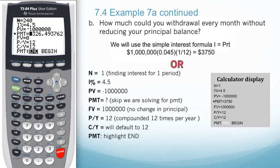One way you can do this is to use the simple interest formula, I equals PRT, taking a million times our interest rate of 4.5% as a decimal, times the amount of months, which would be 1 out of 12. This would give us a payment per month of $3,750, which will allow us to withdraw without touching the balance of a million dollars.